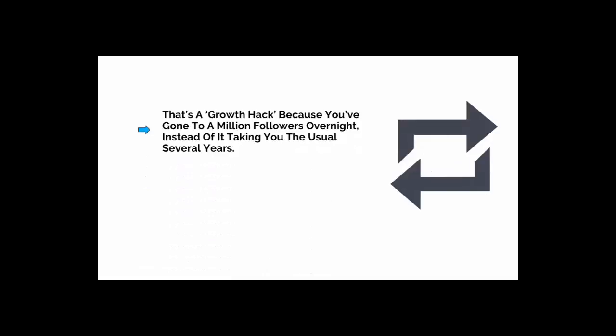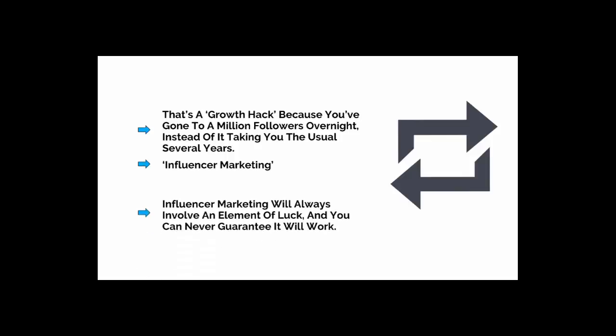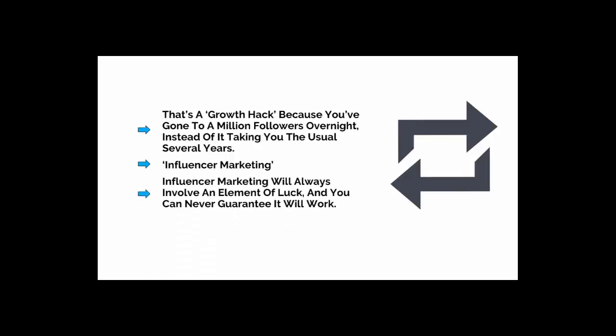That's a growth hack because you've gone to a million followers overnight instead of taking the usual several years. This particular growth hack is using a technique called influencer marketing, where you're relying on the influence of someone already established on Twitter to give you that boost and that head start. Now, influencer marketing will always involve an element of luck and you can never guarantee that it's going to work. Still, it's well worth a try, and by targeting influencers with content tailored for their appreciation and even sometimes mentioning them in comments, you can potentially see amazing results.